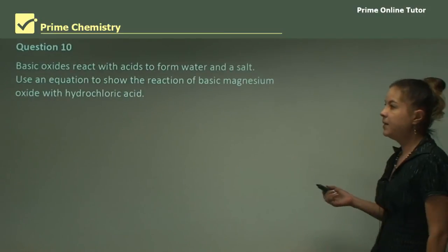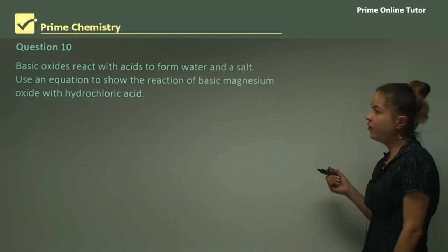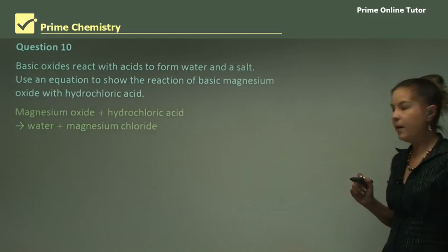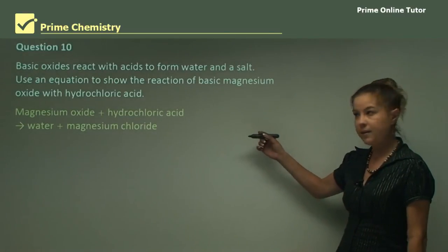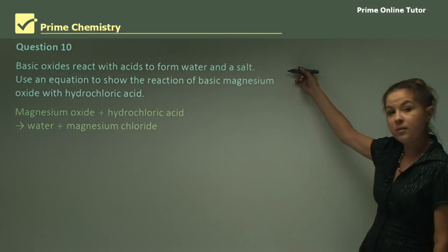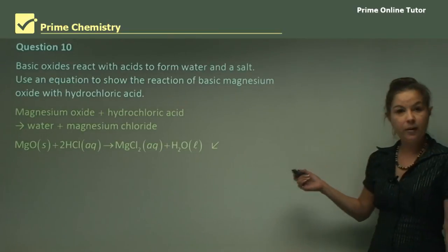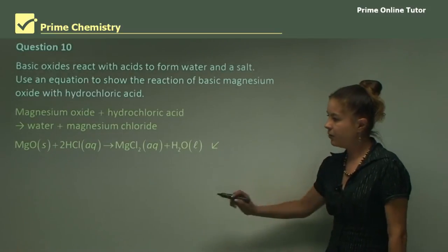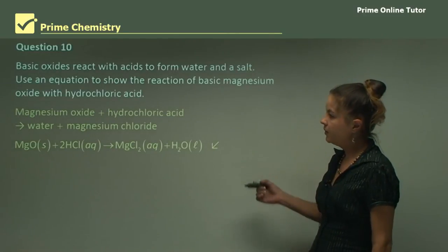Question 10: Basic oxides react with acids to form water and a salt. Use an equation to show the reaction of basic magnesium oxide with hydrochloric acid. Let's write it in words: magnesium oxide and hydrochloric acid will form water and magnesium chloride, because it told us a salt will form and magnesium chloride is the salt. Now we write the equation: MgO plus 2HCl goes to MgCl2 aqueous and H2O. That's the equation for this question.